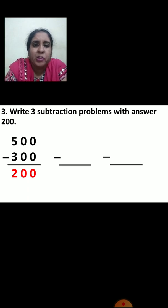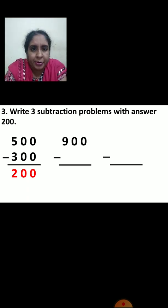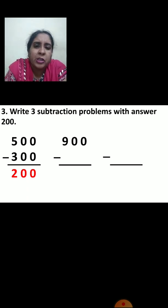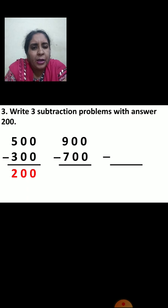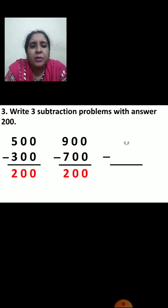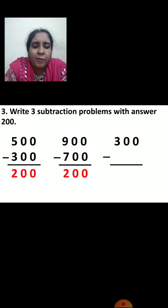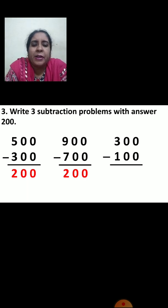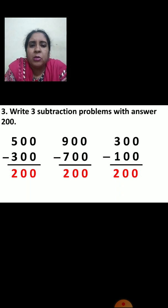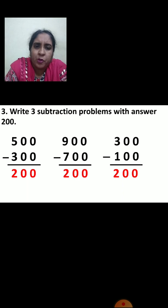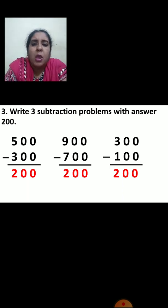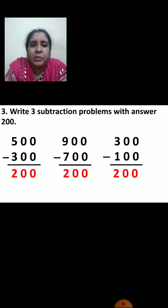For the second example, I have taken nine hundred. I want the answer two hundred, so I will take seven hundred. Nine minus seven is two, and then zero zero. So I got two hundred. For the third example, I have taken three hundred. I will take one hundred as the second number, and then I will get answer two hundred. You can take any number of your choice — there is no hard and fast rule — but your answer should be what is asked, which is two hundred.